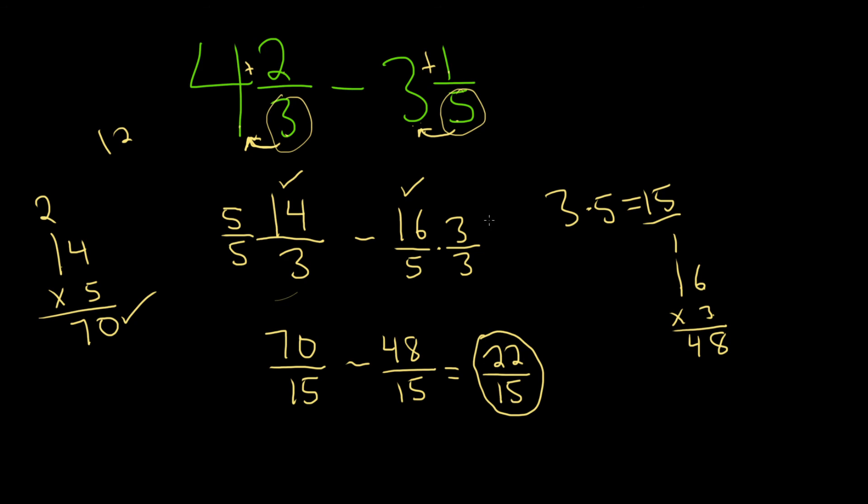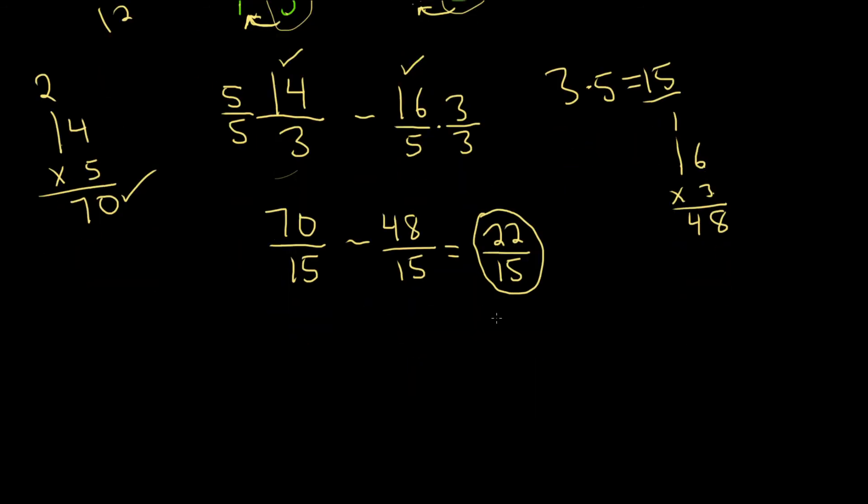But you could write it as a mixed fraction again. To do that, you can do the following. You ask yourself, how many times does 15 go into 22? Well, it goes into 22 one time. And what's left over? Well, 7. And that goes over 15.